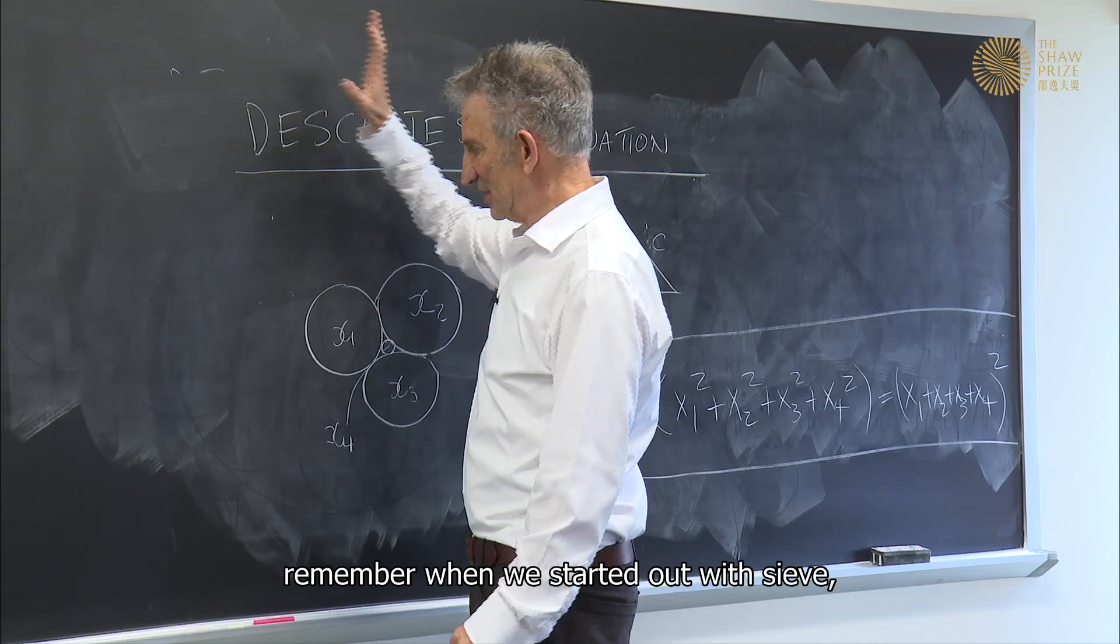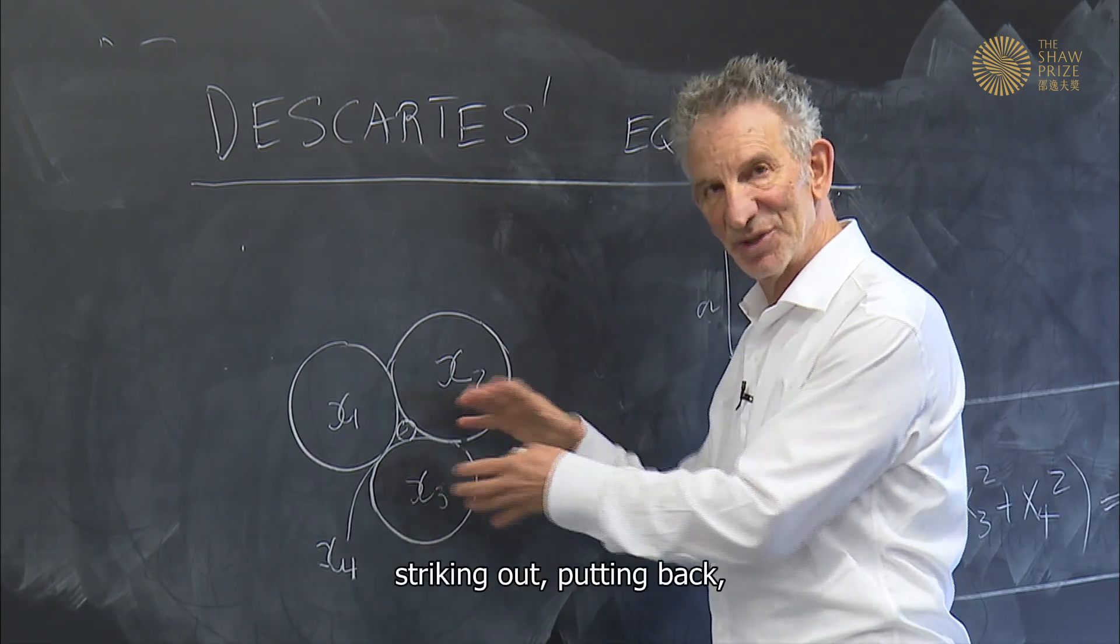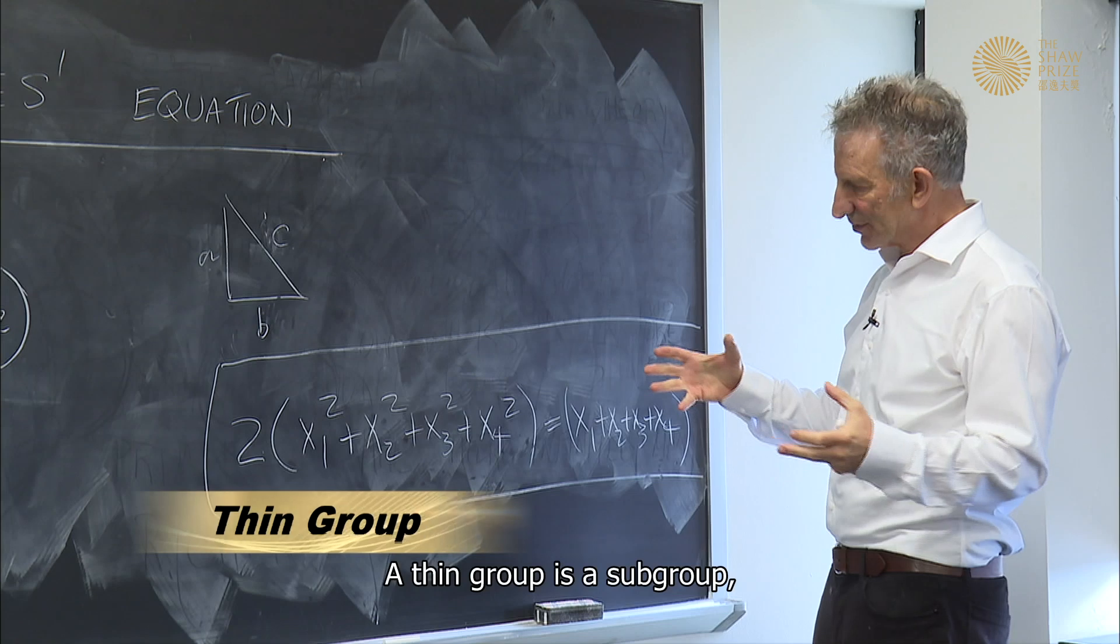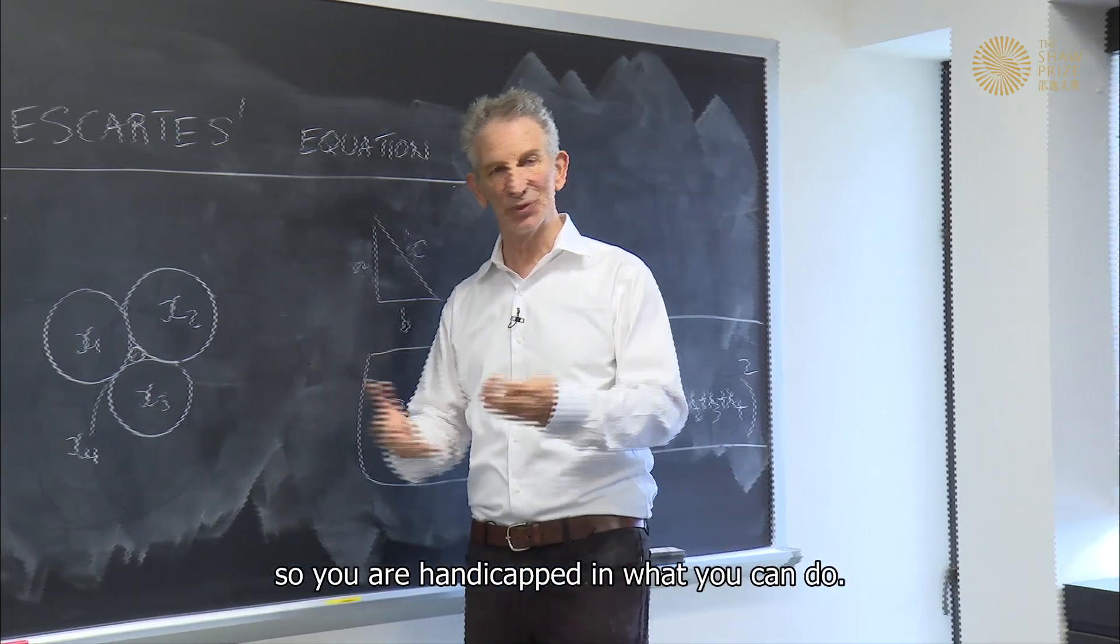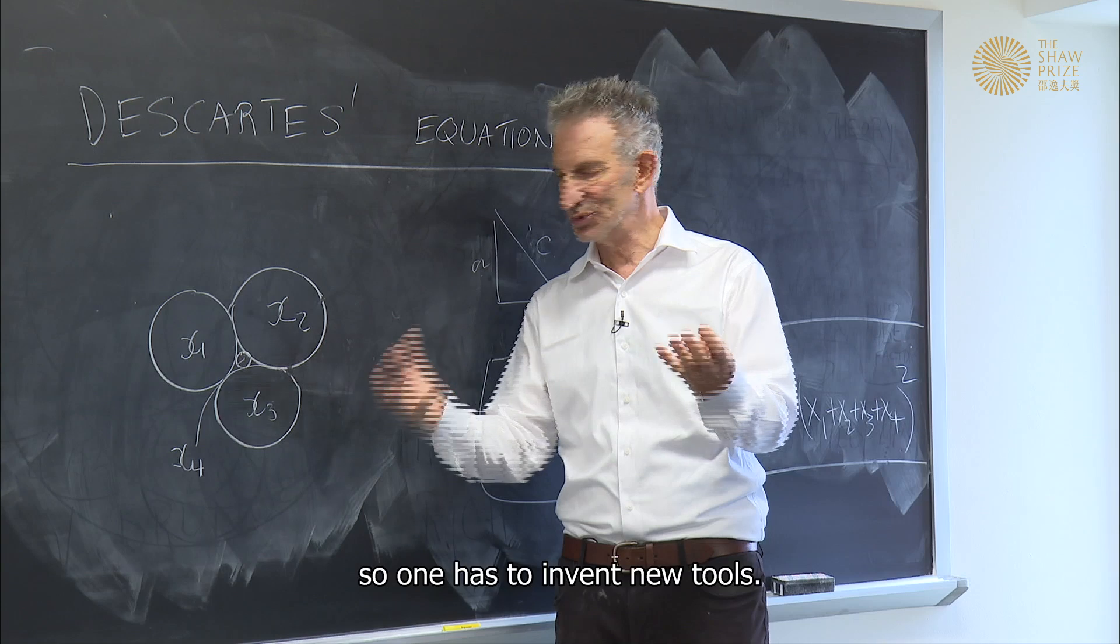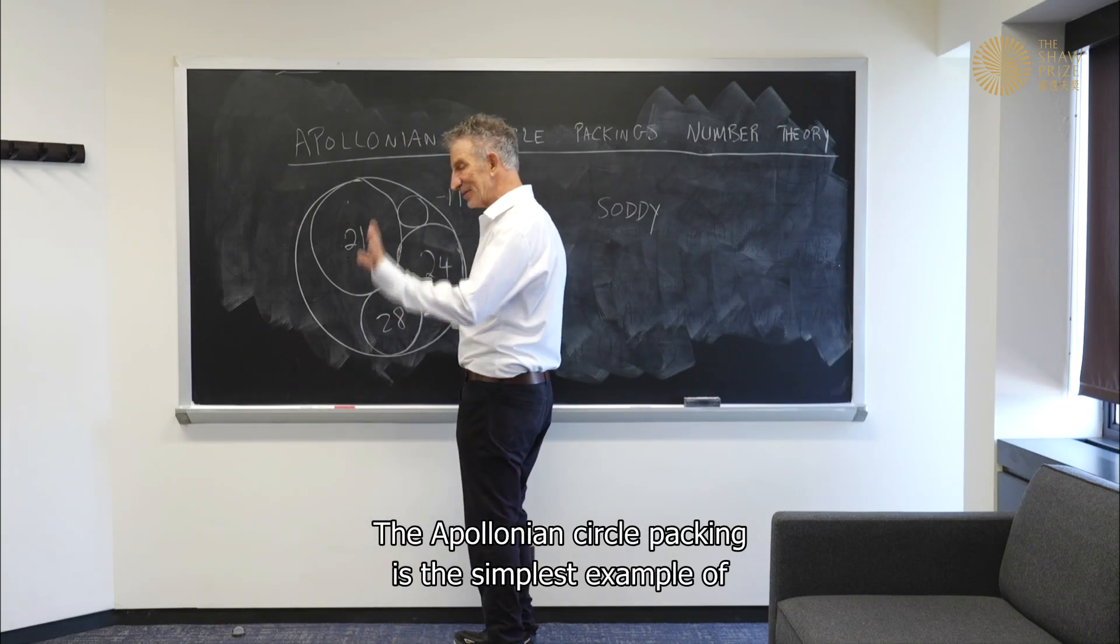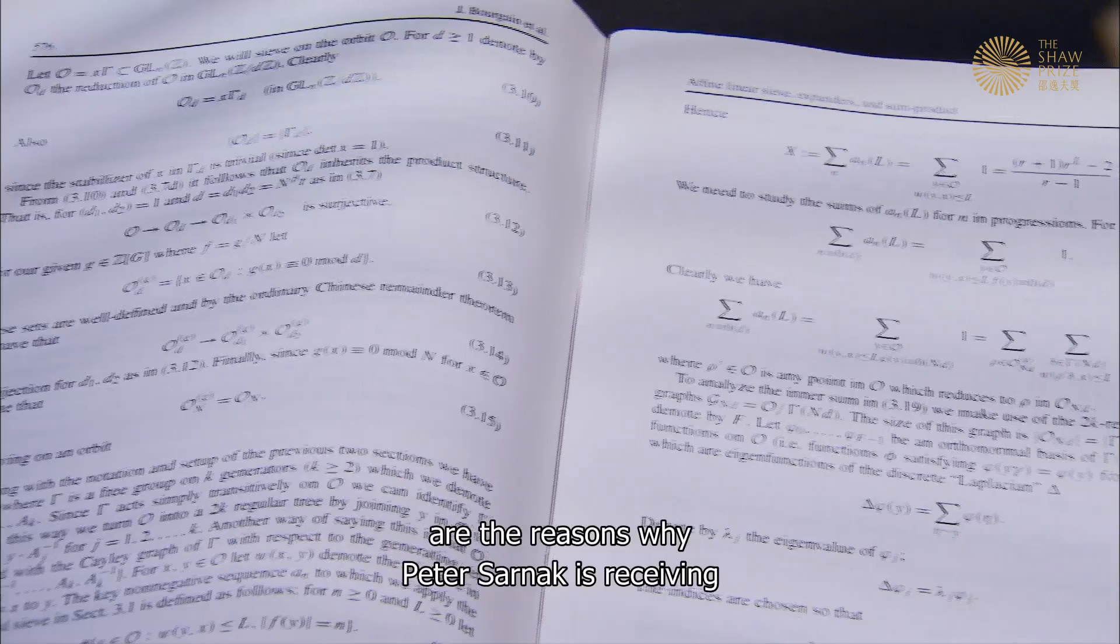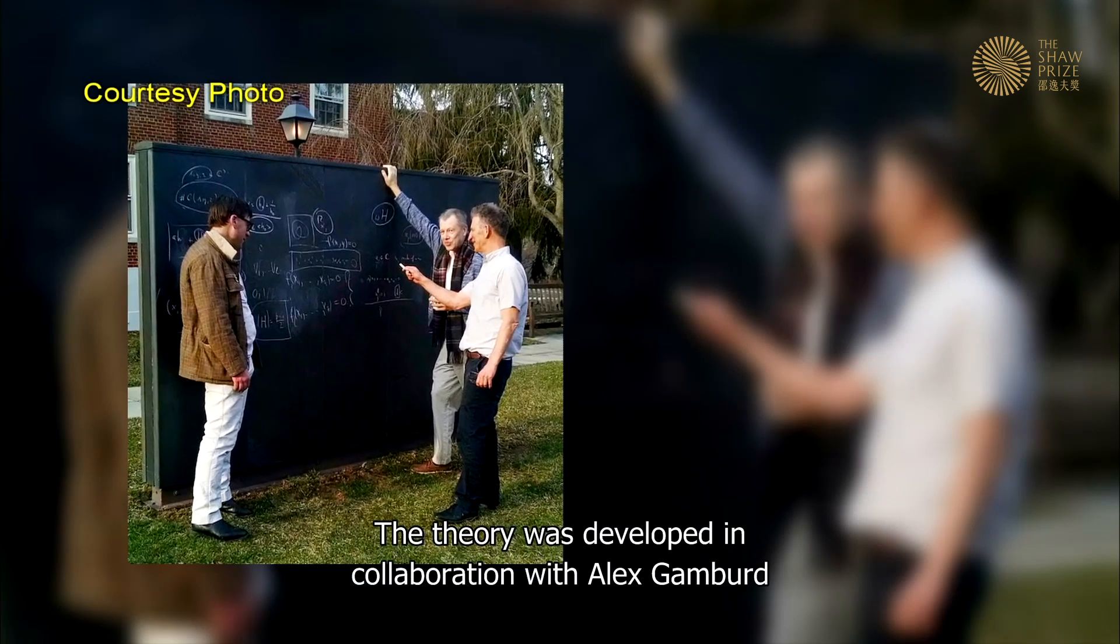Each time Descartes' equation is used to get a new set of curvatures, that's an affine motion. The sieve part of this is, remember when we started out with the sieve, we said we do some complicated inclusion-exclusion. So now we have to do striking out, putting back, striking out, putting back, with these moves, with these formulae of affine transformations, which is entirely new. A thin group is a subgroup where you are only getting a few of the transformations, not all the moves. So you are handicapped in what you can do. And to do something with thin groups is what the new feature was. Each step here is fundamentally new, so one has to invent new tools. And we were able to do that together with many people. The Apollonian circle packing is the simplest example of Peter's theory. The invention of the affine linear sieve and the theory of thin groups are the reasons why Peter Sarnak is receiving the Shaw Prize in Mathematical Sciences. The theory was developed in collaboration with Alex Gorodnik and Jean Bourgain.